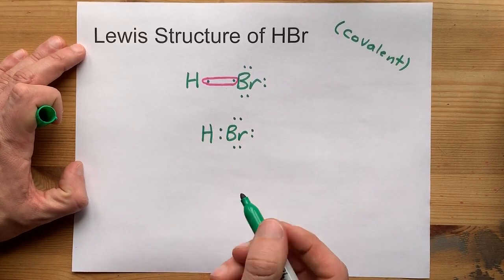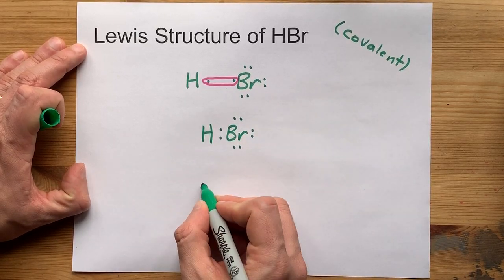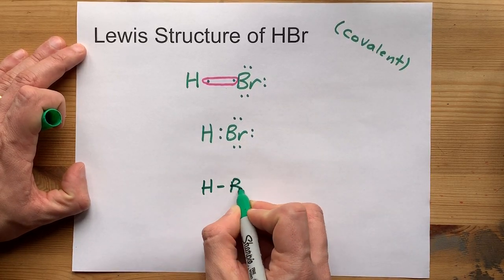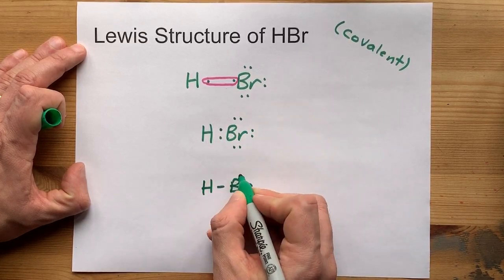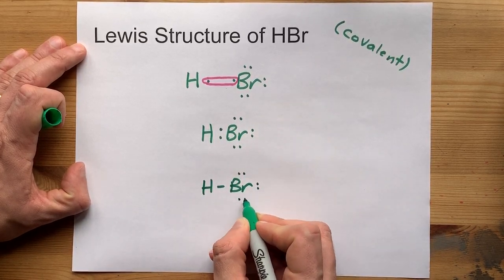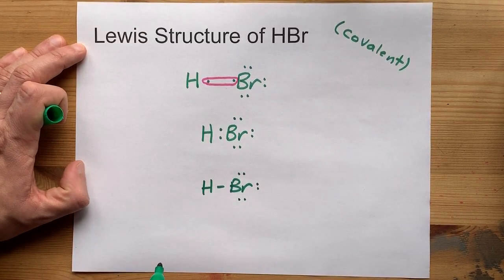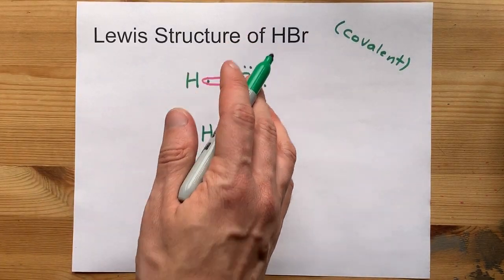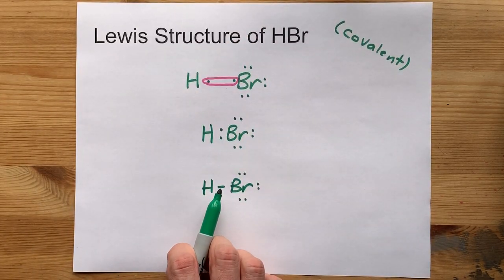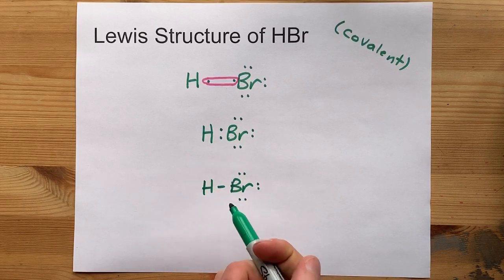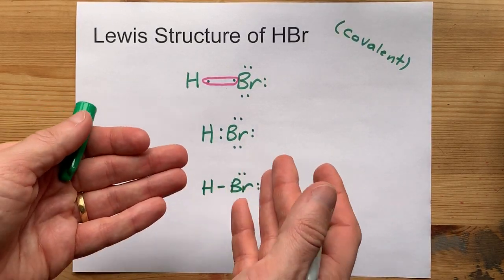Now, by convention, we write this bonding pair of electrons as a single line. And these non-bonding pairs get drawn as double dots. There we go. This is the complete Lewis structure of HBr, sharing electrons bonds to complete their outer shells. It's beautiful.